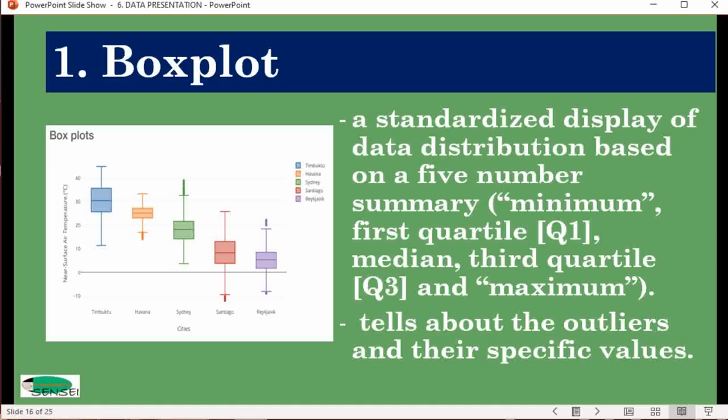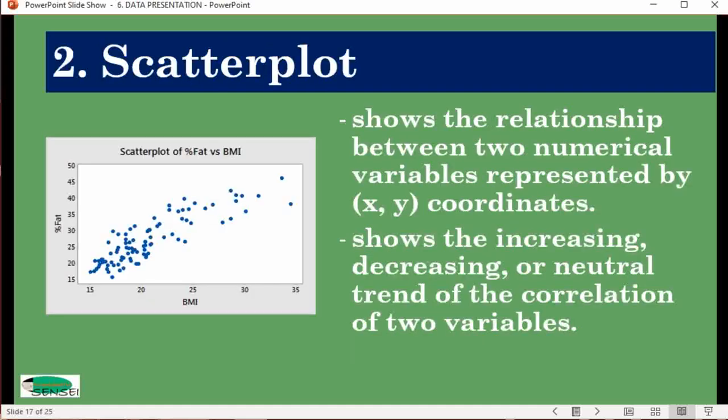Next is scatterplot. Scatterplots are often used to show relationships between two variables. If your statistical analysis is correlation or regression, you are expected to present a scatterplot to show how the trend of the relationship between the two variables is displayed. You can see whether it's increasing, decreasing, or neutral. Most likely if your research is correlation, you will have a scatterplot.